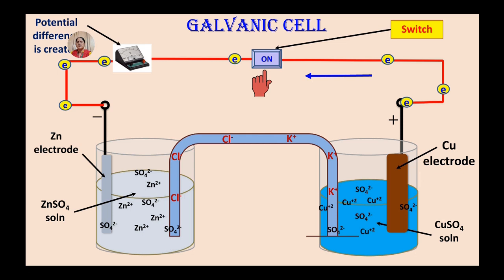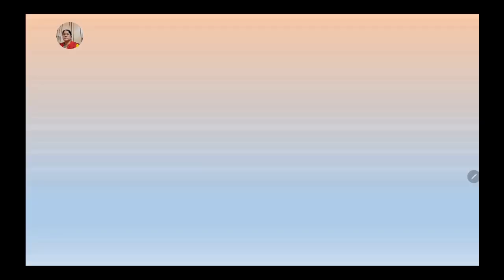By convention, the direction of flow of current is opposite to the direction of electron flow. As you can see in the diagram students, electrons are flowing from anode to cathode and the current flow in the form of arrows you can see is from positive electrode that is copper cathode to negative electrode that is zinc anode.